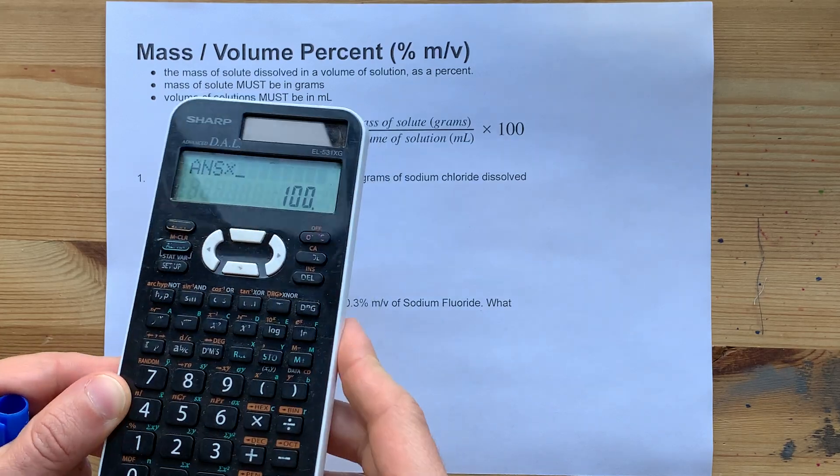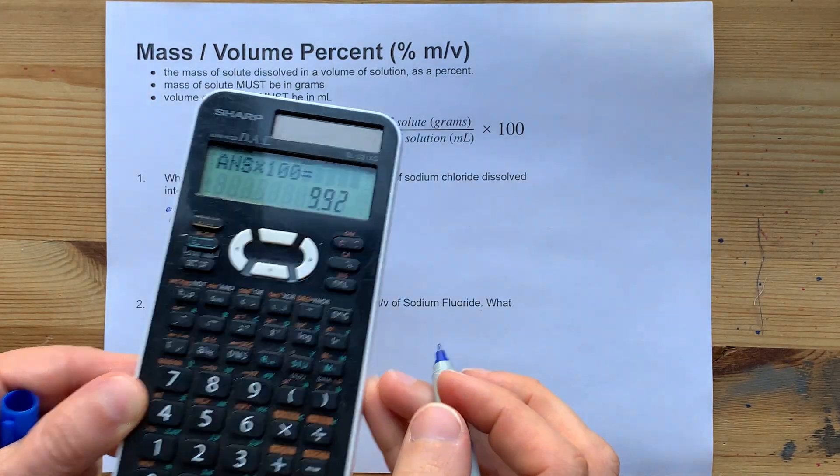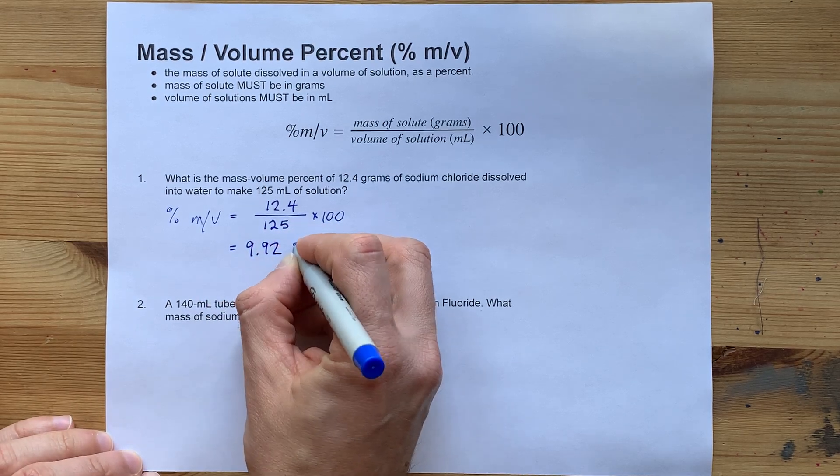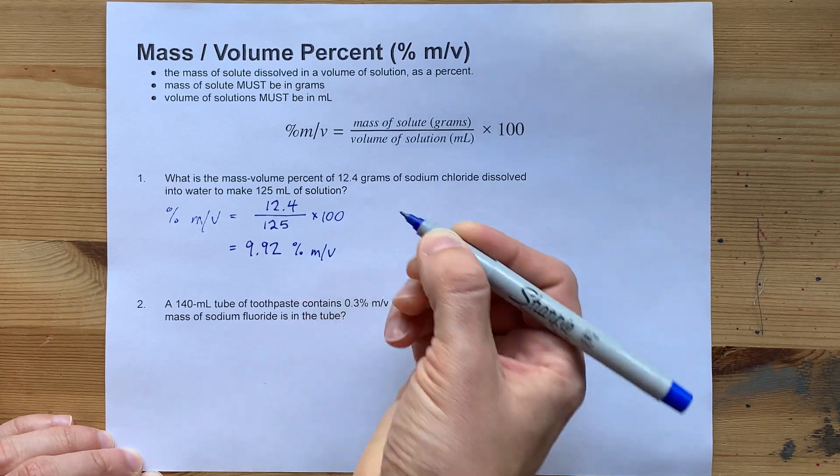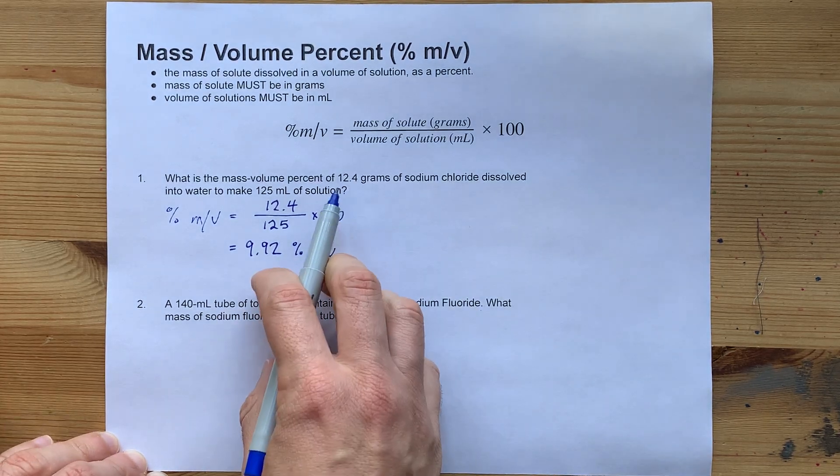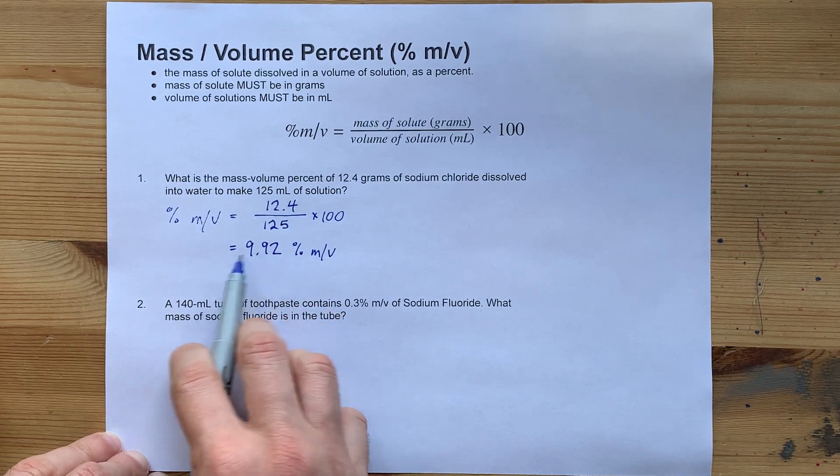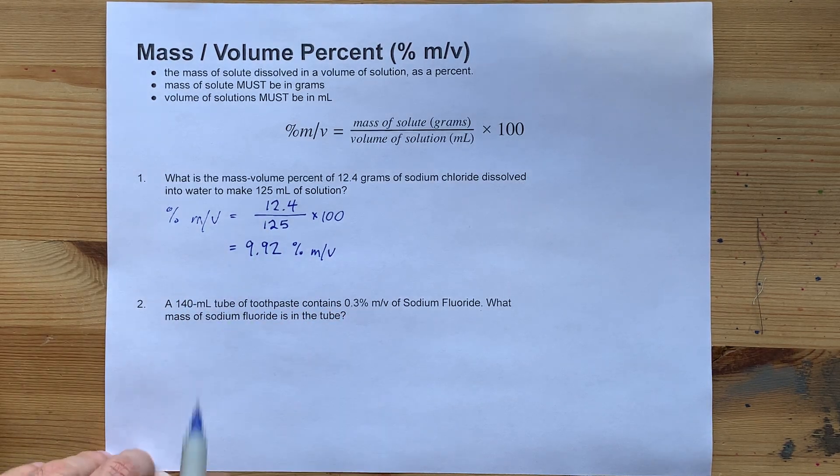I get 0.0992. As a percent, that ends up being 9.92, and you'll write percent M over V as your unit. Now, this number had three significant figures, and this number had three significant figures, so three significant figures is right here.